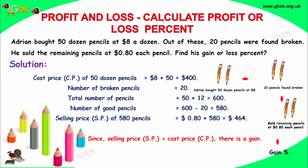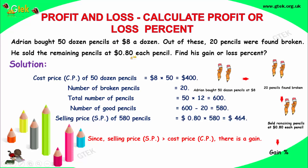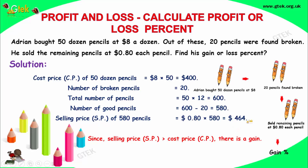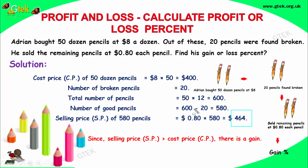Now, each pencil was sold for 0.8 dollars. So 580 into 0.8 dollars equals 464 dollars. He spent 400 dollars to buy, and the selling price came to 464 dollars.